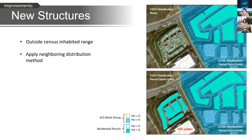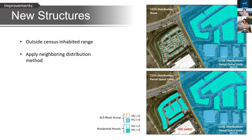Another key improvement is identification of new structures. A major assumption of top-down methodologies is that higher-level units always encompass accurate counts — but that's not always true. We've seen cases where one block group had population successfully distributed to parcels, while an adjacent block group recorded zero housing units — a problem. We incorporate identification of areas otherwise excluded but known to be residential, using a nearest-neighbor algorithm with additional criteria to determine appropriate distribution methods, capturing all residential areas regardless of whether they're recorded in census data.